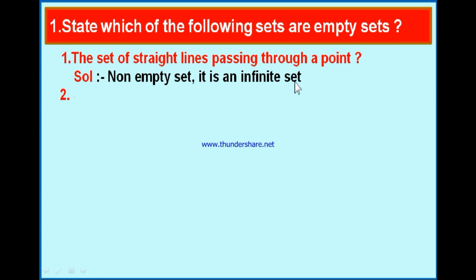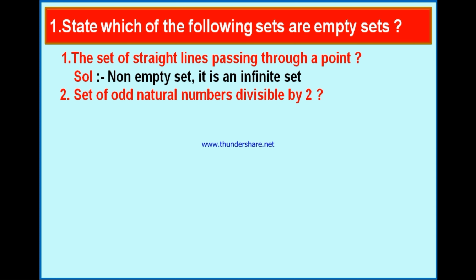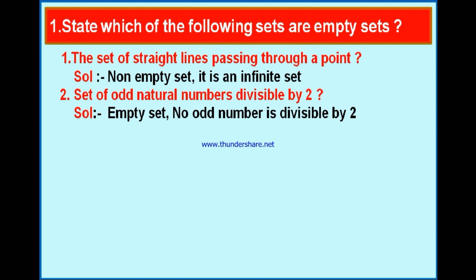Bit 2: the set of odd natural numbers divisible by 2. We know that if a number is not divisible by 2, then only it is called an odd number. Since it is an odd number, it is not divisible by 2. Therefore, there is no such odd number divisible by 2, and this is an empty set.